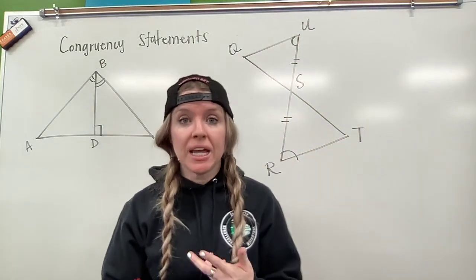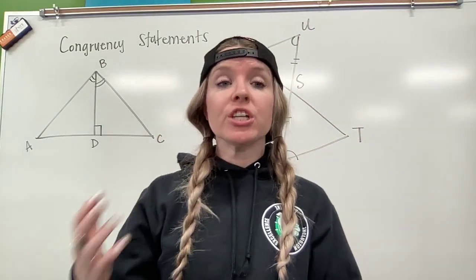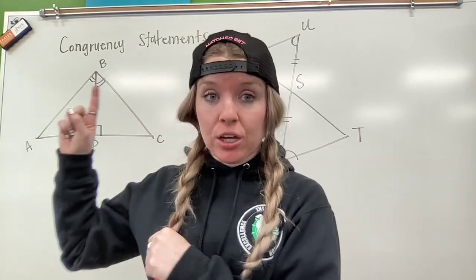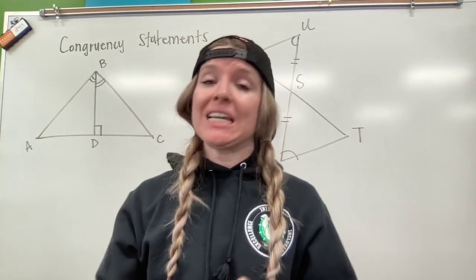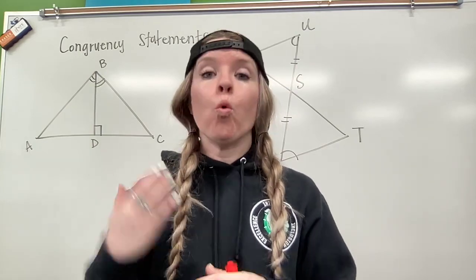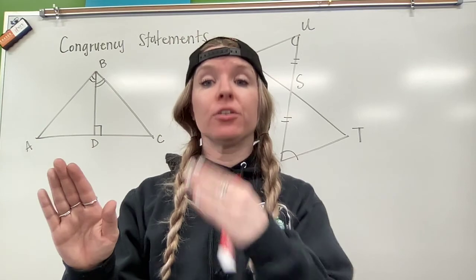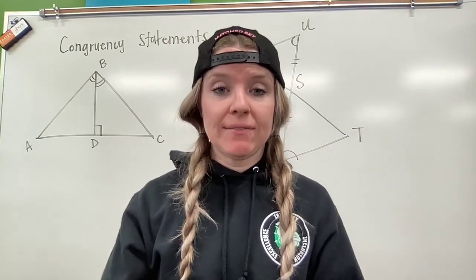Now that we know how to determine if triangles are congruent, we're actually going to go in and we're going to label that congruency, which creates a congruency statement. What that does is it tells us what piece or what corresponding parts of triangle A are congruent to triangle B. So let's dive in and take a look.